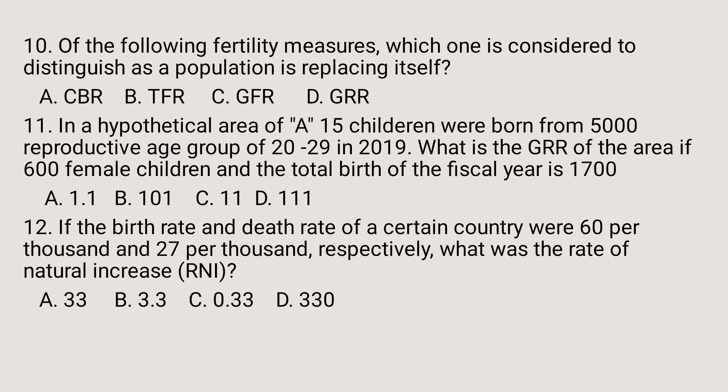Question number 10. Of the following fertility measures, which one is considered to distinguish whether a population is replacing itself? A. Crude birth rate. B. Total fertility rate. C. General fertility rate. D. Gross reproductive rate. The gross reproductive rate is the index used to identify whether the population is replacing itself or not.